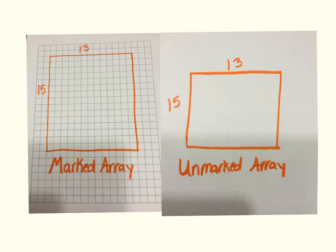So now that we're in fifth grade, we're going to move to be using an unmarked array. An unmarked array is very similar to a marked array, except you can see that there are no individual squares marked off because we're using it as just a representation of a multiplication problem.